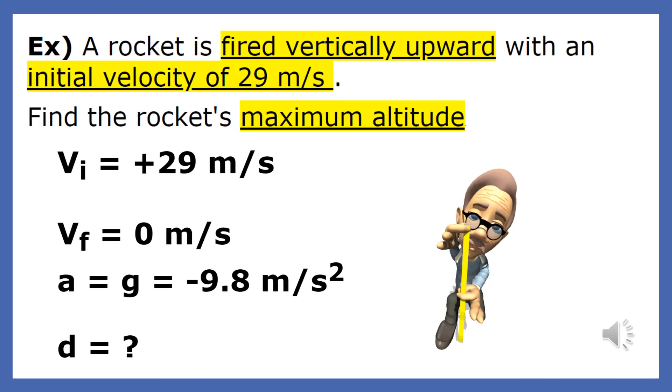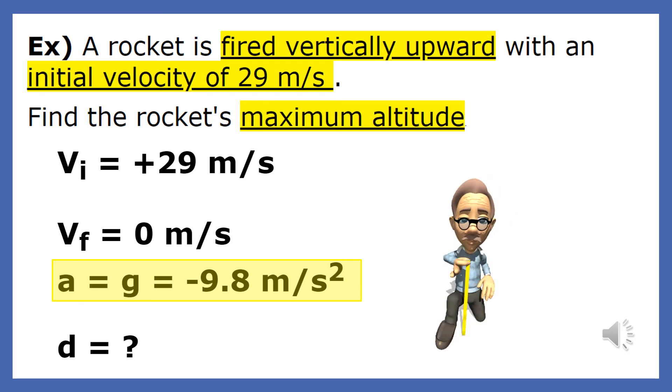Since the rocket moves upward, we make the direction down negative, so now the acceleration due to gravity is negative 9.8 meters per second squared.